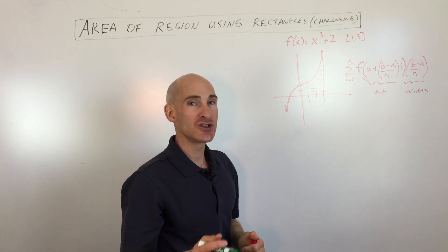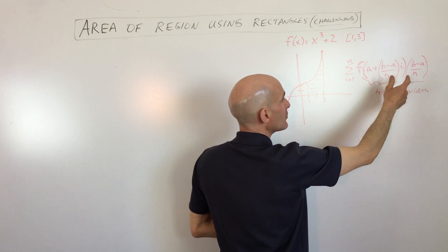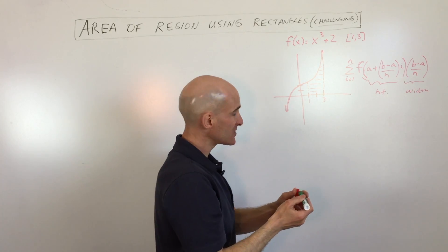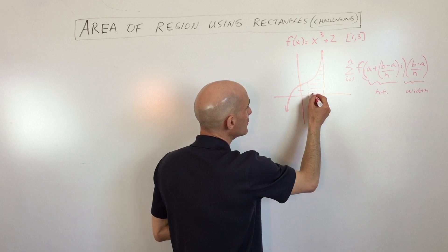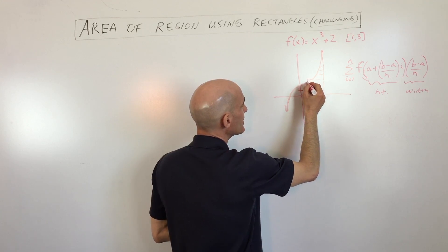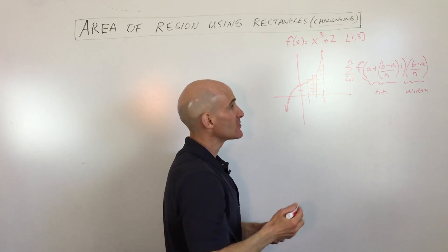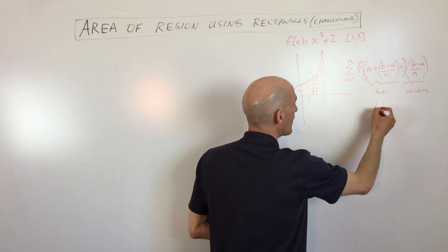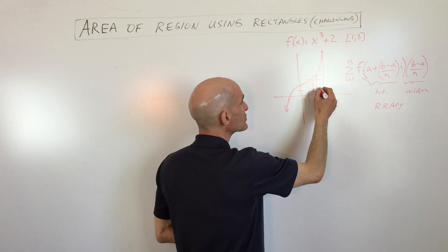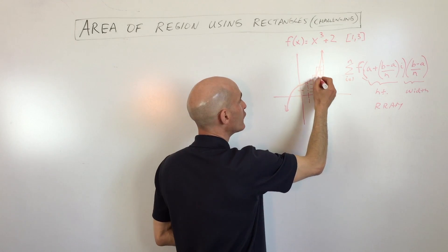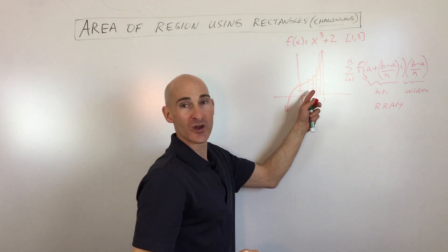What we want to do is find out the width of the rectangles and the height of the rectangles. It's like subdividing this region up into rectangles like this. Sometimes this is called the right rectangular approximation method, the RRAM. Right now I'm just subdividing it into four rectangles just to show you what we're doing here.